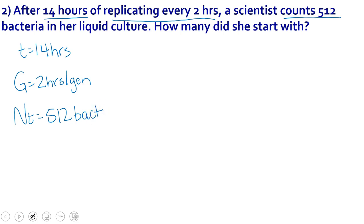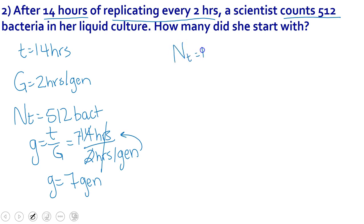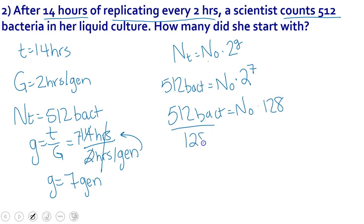So we begin this problem just like the last one by finding little g. So little g equals t divided by big G equals 14 hours divided by two hours per generation. Hours cancel out, generations comes to the top, 14 divided by two is seven. So little g equals seven generations. So now we come to our larger equation, N sub t equals N sub zero times two to the g. In this case we don't know N sub zero. So instead, we plug in N sub t, which is 512 bacteria, equals N sub zero times two to the seventh. Now two to the seventh equals 128. So now we divide both sides by 128, and we get four bacteria equals N sub zero. So we started with four bacteria. Take a moment to make sure you've got that in your notes and you understand it and then move on to the next problem.